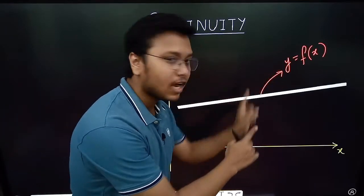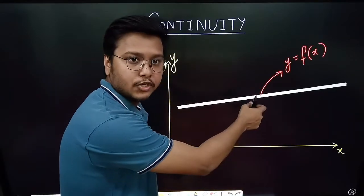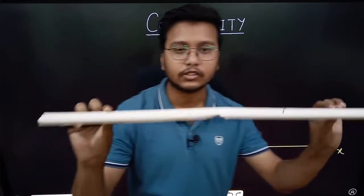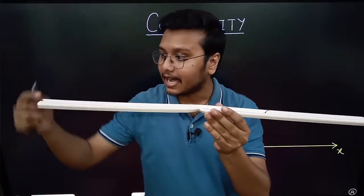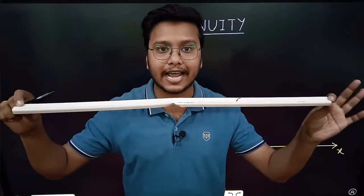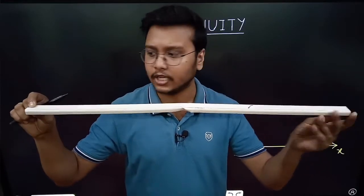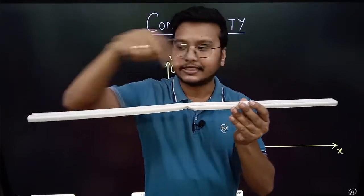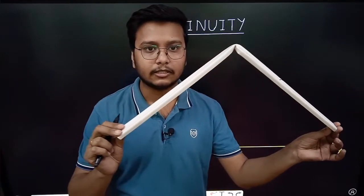Imagine I have this y = f(x) function and I ask you: is it continuous or not? Let's take this function from the board — imagine this is a metal conductor and I am applying electricity at this point. Will the electricity reach the other end? If yes, then it is continuous; if not, then it is not continuous. Since the endpoints of this conductor are connected, it is continuous.